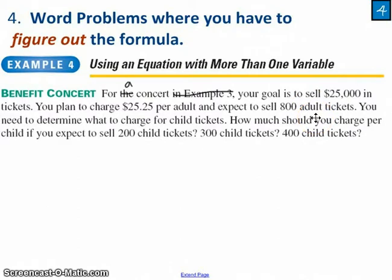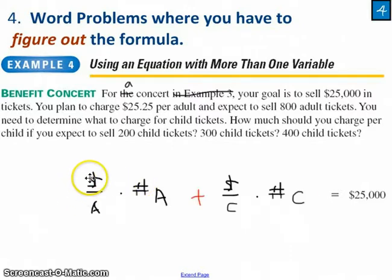So I know that the equation I'm going to end up working with is going to have some information over here to the left is equal to $25,000. Everything that I put together in order to reach my goal has to end up at this point. So what is this material over here to the left? It's the price per adult times how many adults come to the concert plus the price I charge per child times the number of children that come to the concert. Go ahead and pause the video here and read it yourself to make sure that you're clear how I came up with this.